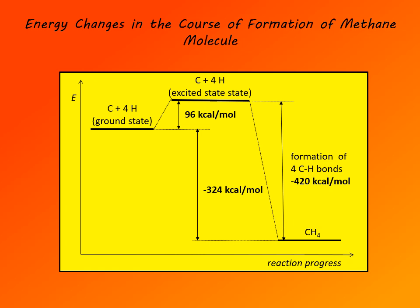Now that carbon is in an excited state with four unpaired electrons, it can form bonds with four hydrogens. Formation of a bond releases energy, and formation of four carbon–hydrogen bonds releases 420 kilocalories per mole. The overall process is exothermic by 324 kilocalories per mole. Of course, this is an idealized process — methane is not actually formed this way.